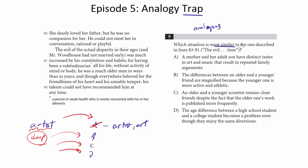Which situation is most similar to the one described in lines 83 to 91? I'm going to get a bit more text outside of that just to get more context. So let's see what the situation is. She dearly loved her father, but he was no companion for her. He could not meet her in conversation, rational or playful. The evil of the actual disparity in their ages, and Mr.